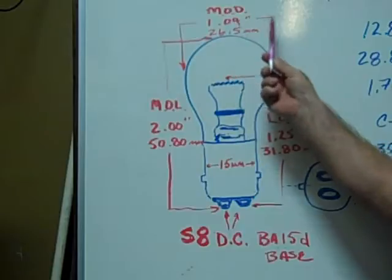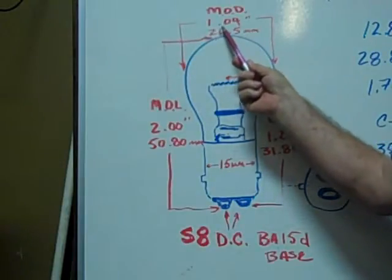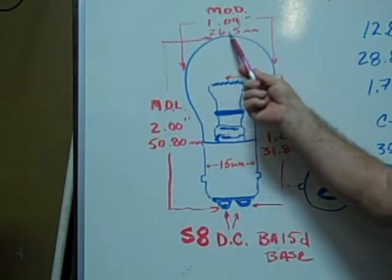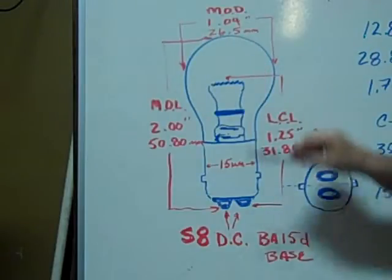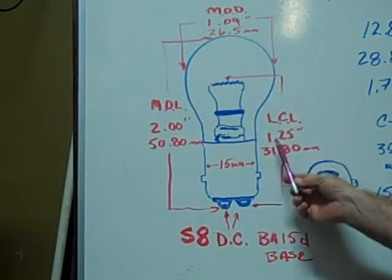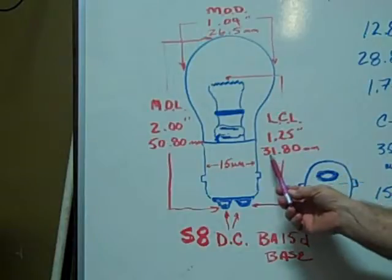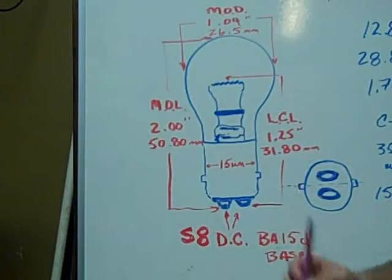The maximum outer diameter is 1.04 inches or 26.5 millimeters. The light centered length is 1.25 inches or 31.80 millimeters.